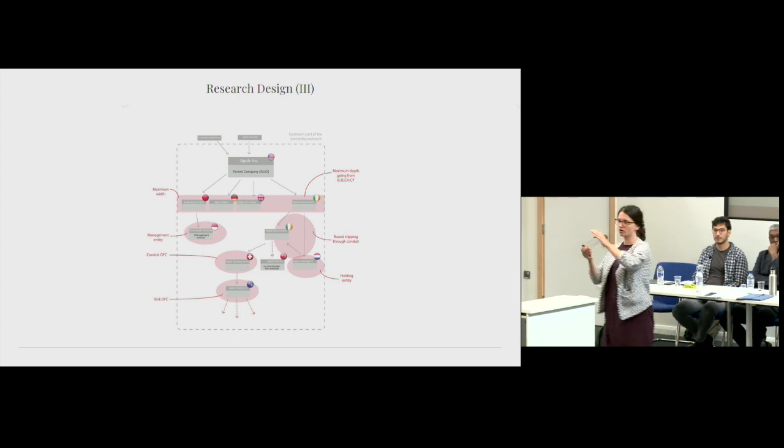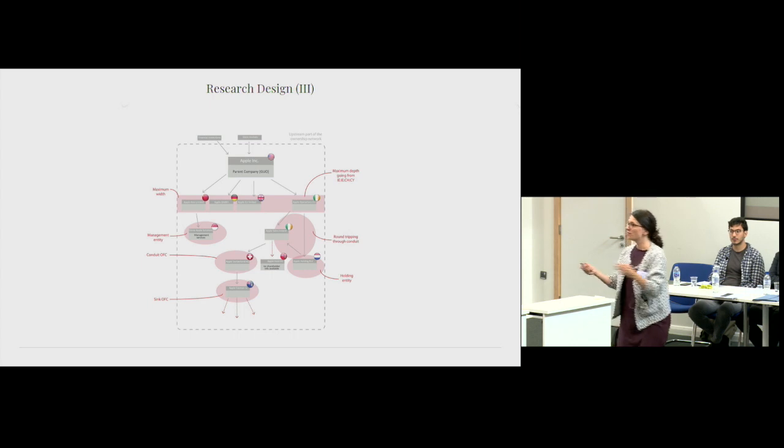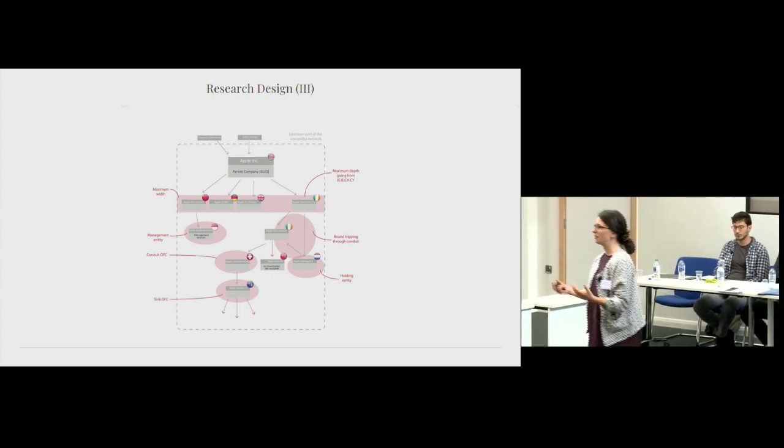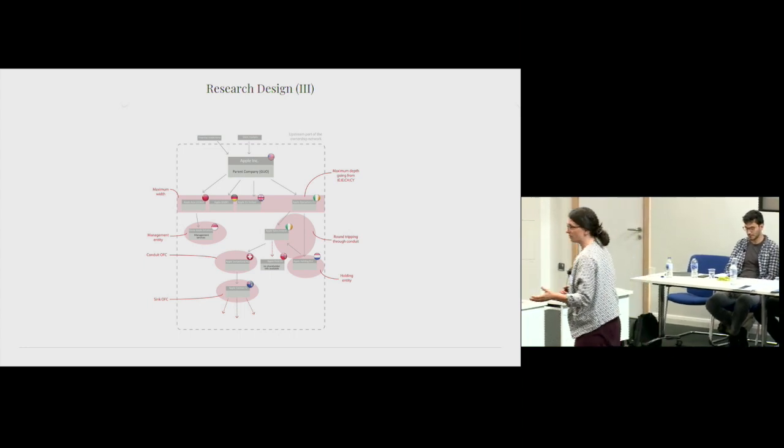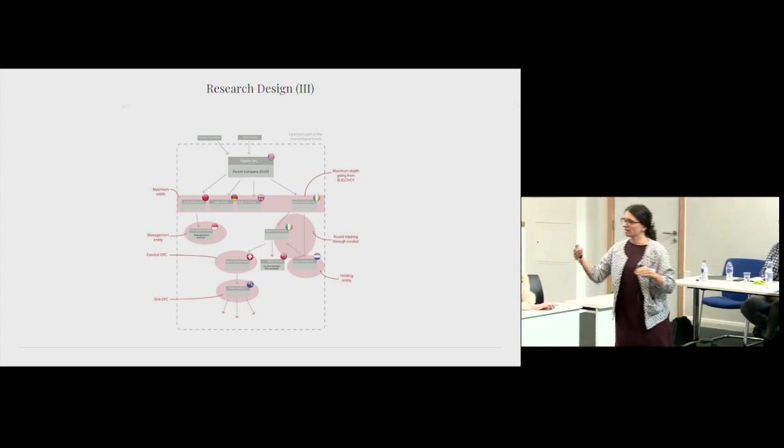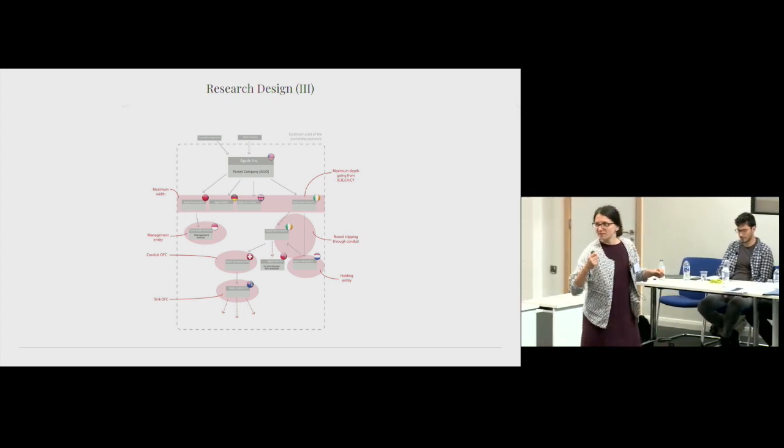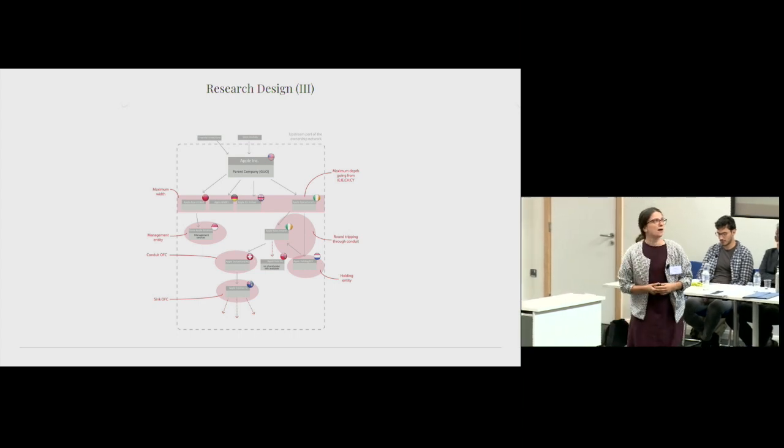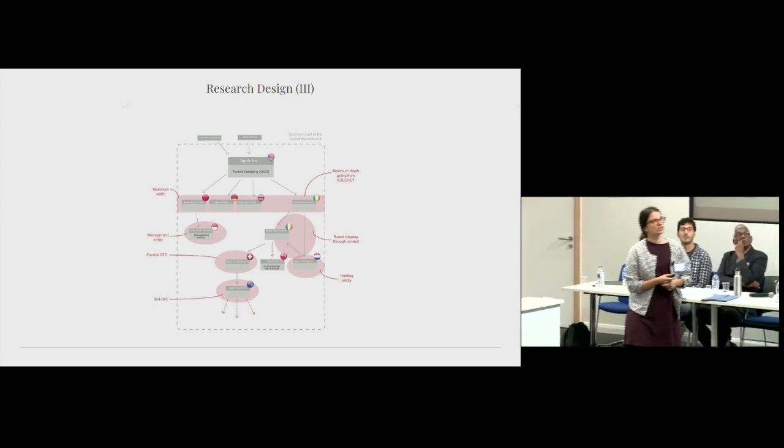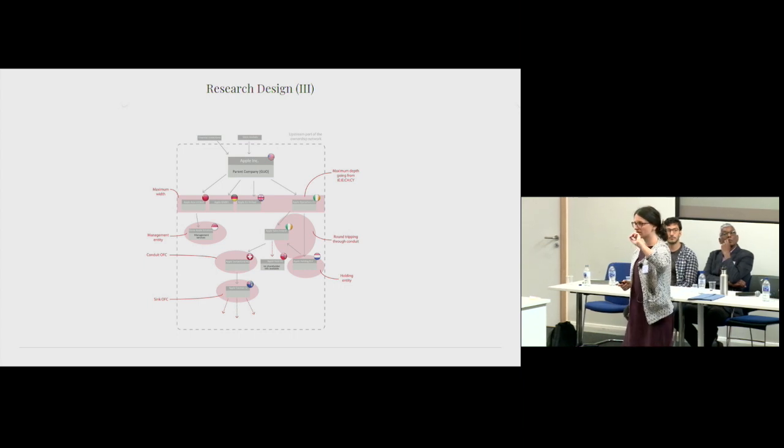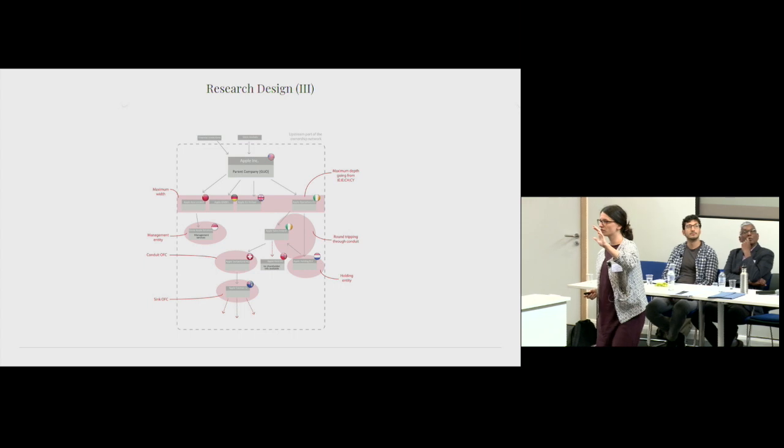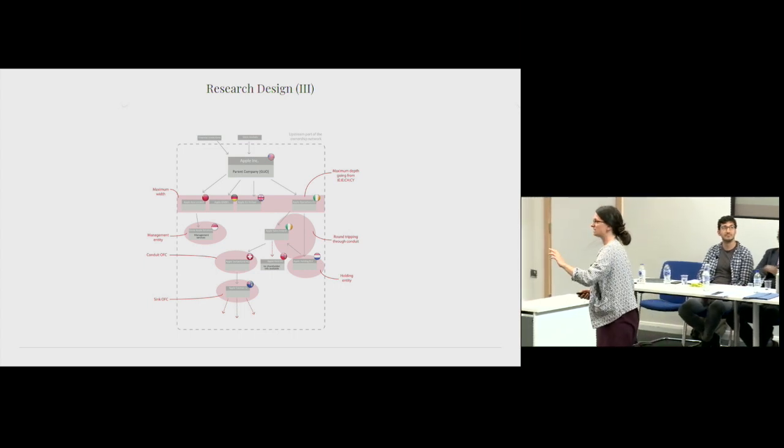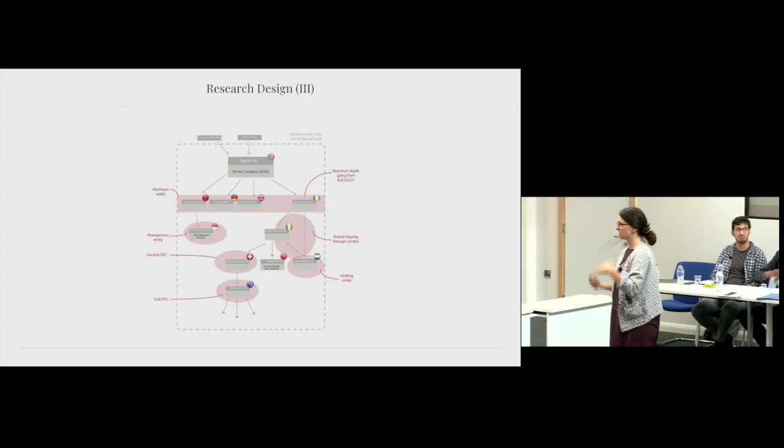We looked at the corporate structures of these companies because obviously it would be better to look at the fees and look at what exactly the accountancy firms sell to these companies, but there's no information about that. So looking at the corporate structure is like entering by the back door. The corporate structures we looked at are localization strategies. How many subsidiaries are placed in sink offshore financial centers? How many of them are placed in conduit offshore financial centers, such as Switzerland?